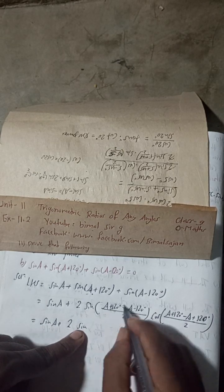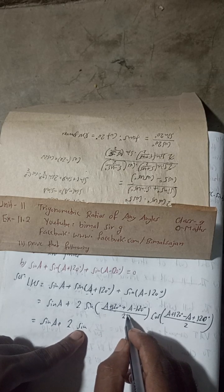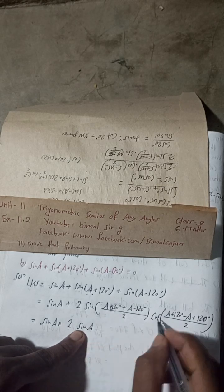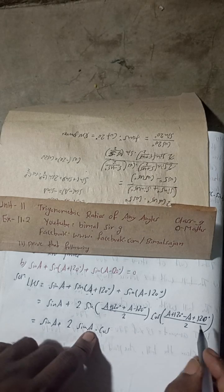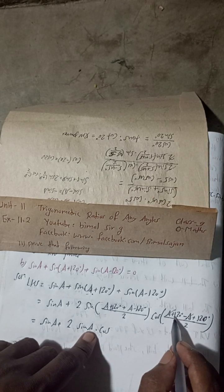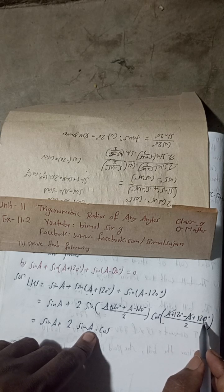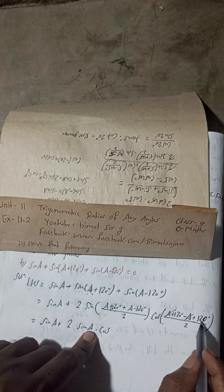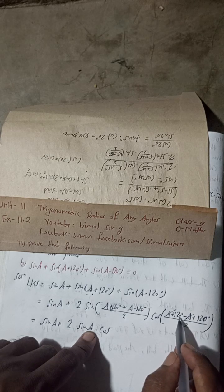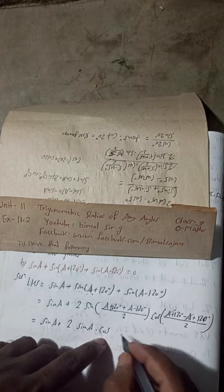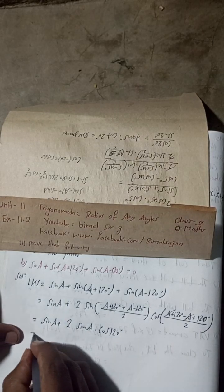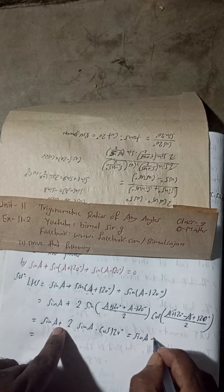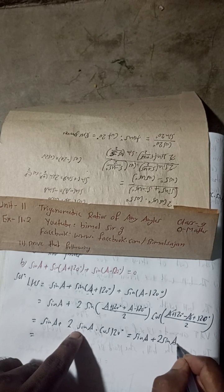So C + D over 2 gives us 2A over 2, which is just A. And C − D over 2 gives us 240° divided by 2, which is 120°. So the expression becomes: sin(A) + 2 sin(A) cos(120°).